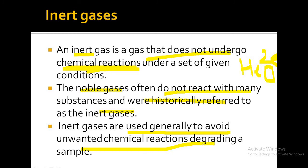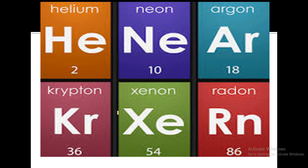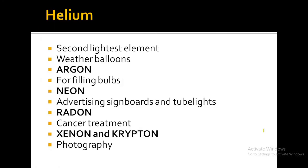Inert gases are generally used to avoid unwanted chemical reactions or degrading of a sample. The inert elements are helium, neon, argon, krypton, xenon, and radon. Helium is the second lightest element after hydrogen, and since it is inactive, it is used for filling air balloons or weather balloons. Argon, because of its inert nature, is used for filling electric bulbs.